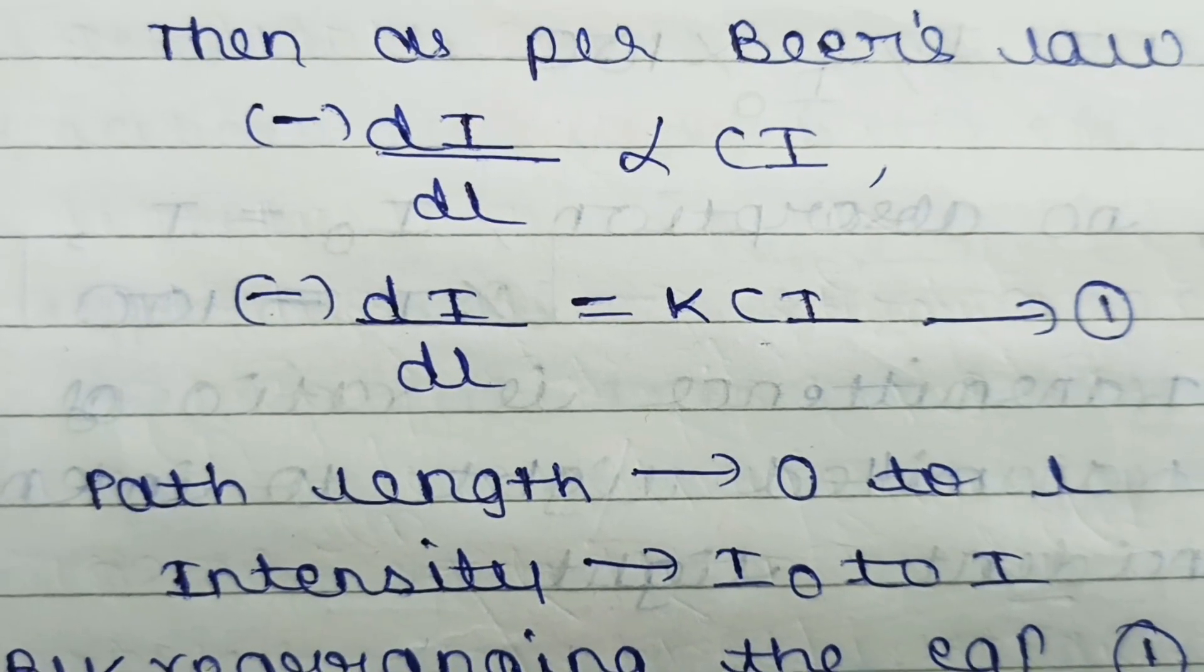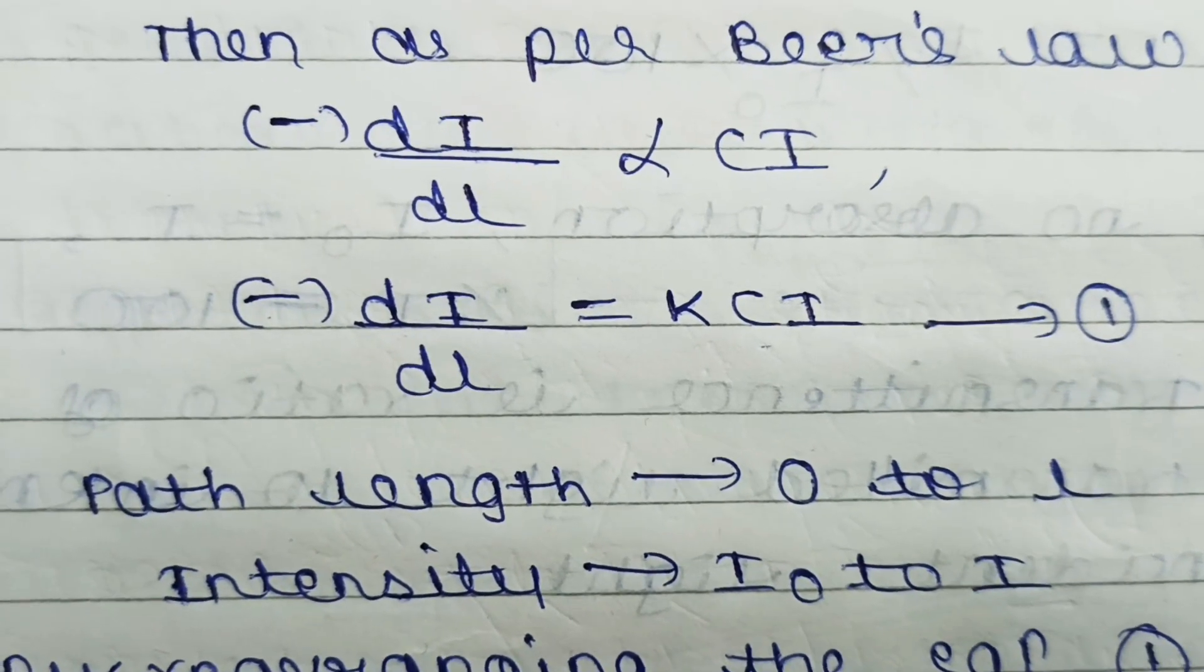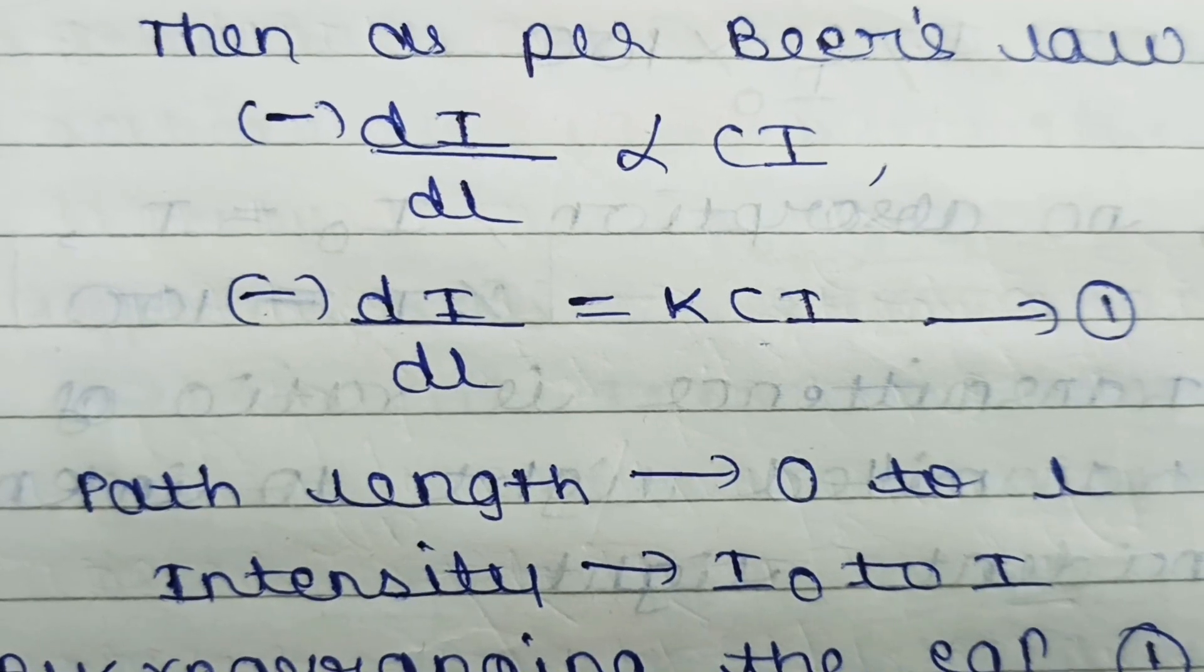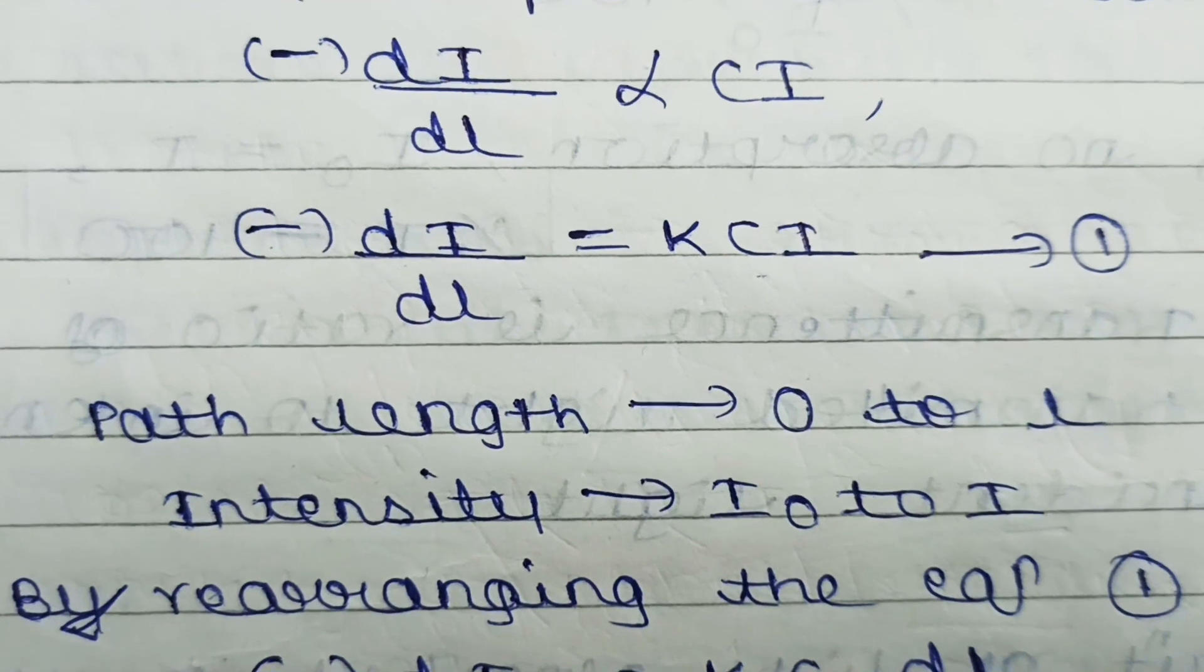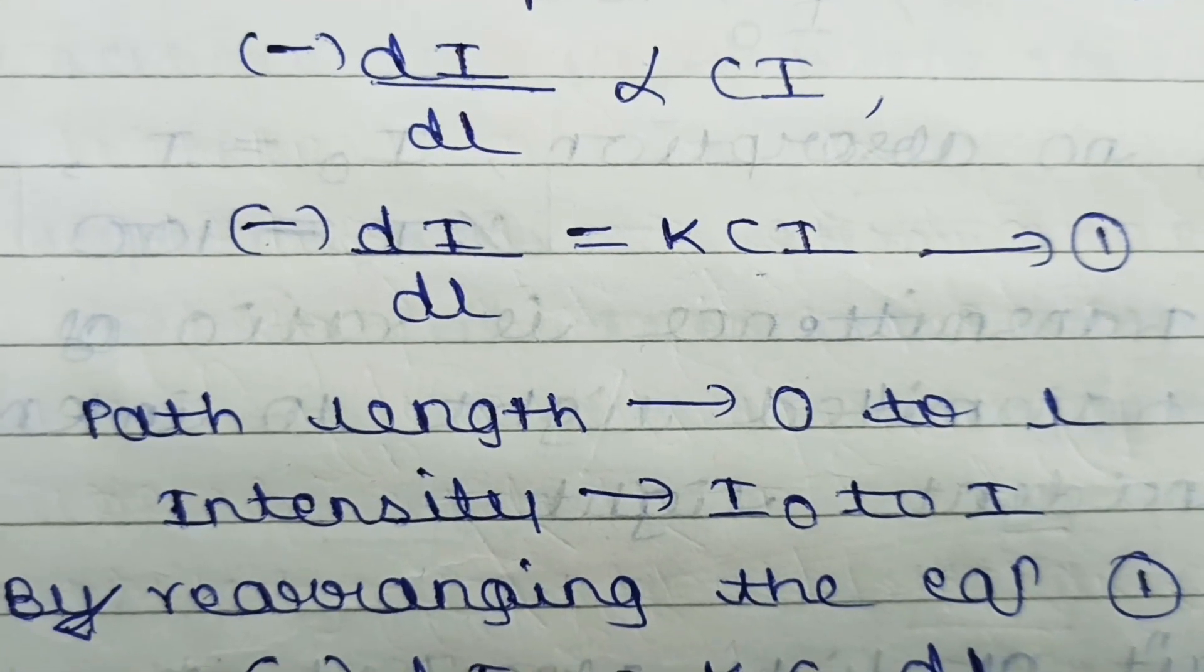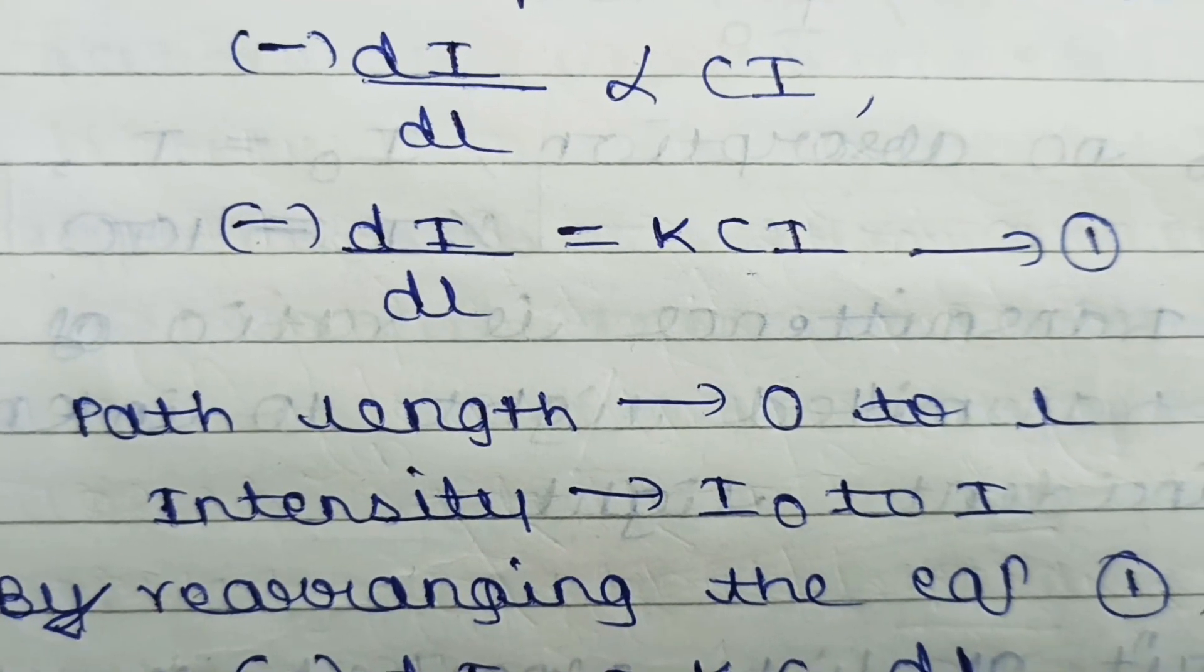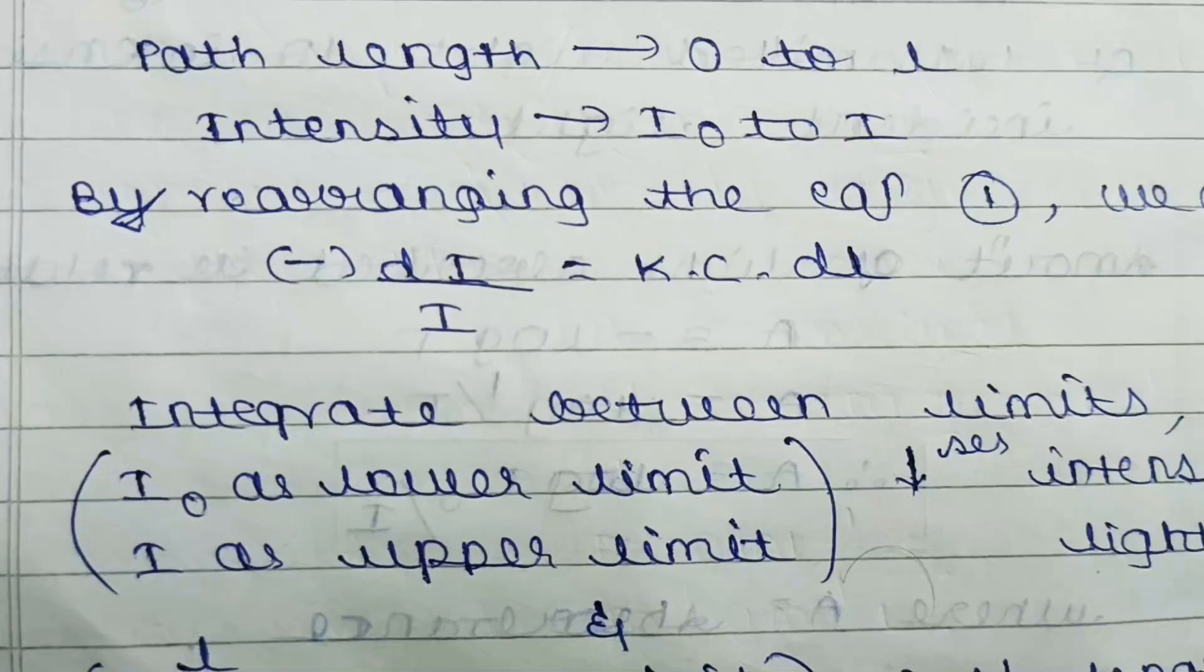We have taken a small compartment, so we use DI and DL. It is directly proportional to the concentration and the intensity CI. For removing the proportionality, we add the proportionality constant K. Then equation number one becomes: minus DI/DL equals KCI.